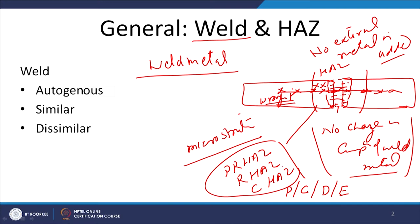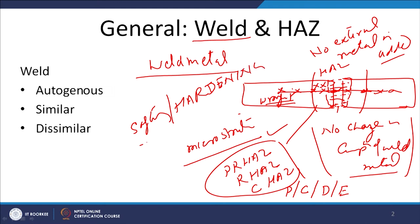Despite no change in the chemical composition of the weld metal, whenever a base metal is welded by a fusion welding process, there is always structural variation. Depending upon the characteristics of the metal, there can be softening or hardening depending on the kind of metallurgical transformations taking place in the weld zone. For example, most metals like precipitation hardenable systems, work hardenable systems, and dispersion hardened systems, when welded by the fusion welding process, show that even for autogenous welding where no change in chemical composition occurs, the weld metal is found to have poorer mechanical properties due to unfavorable metallurgical transformations as compared to the base metal.